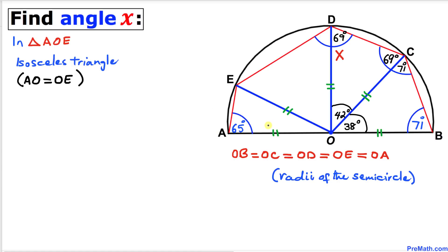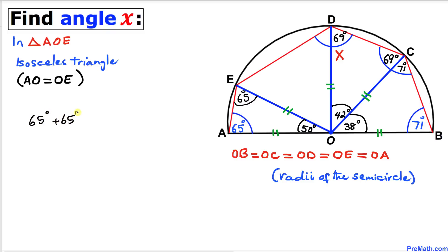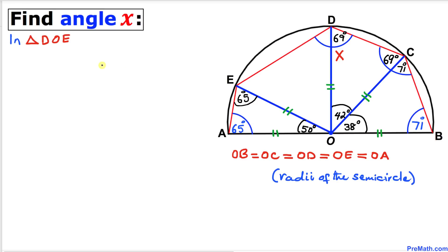Now let's focus on triangle AOE. This is an isosceles triangle since OA equals OE. Therefore both base angles are equal — if this angle is 65 degrees, this angle must be 65 degrees as well. The sum of all angles in triangle AOE equals 180 degrees, so the third angle at O is 50 degrees: 65 + 65 + 50 = 180 degrees.